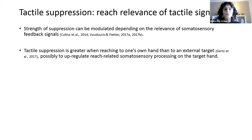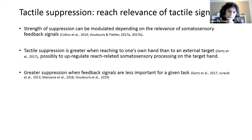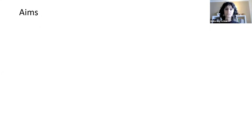And this is possibly to upregulate the reach-related processing on the target hand. Likewise, we also see greater suppression when feedback signals are less important. So when we are about to grasp something, suppression on our index finger that would grasp the object is actually less than on our forearm. So there are definitely these modulations.